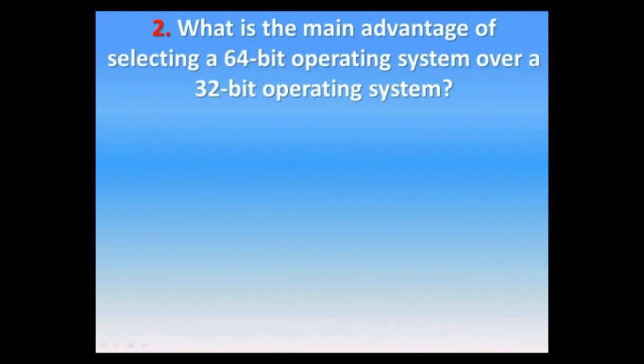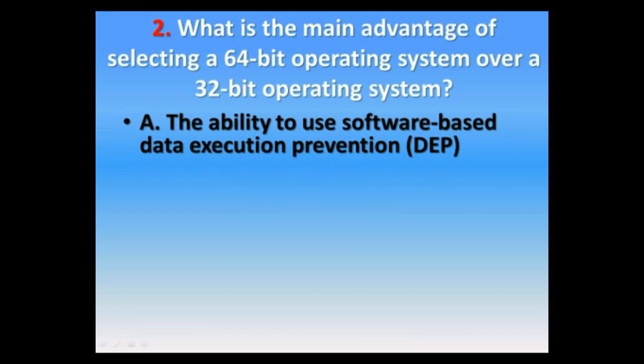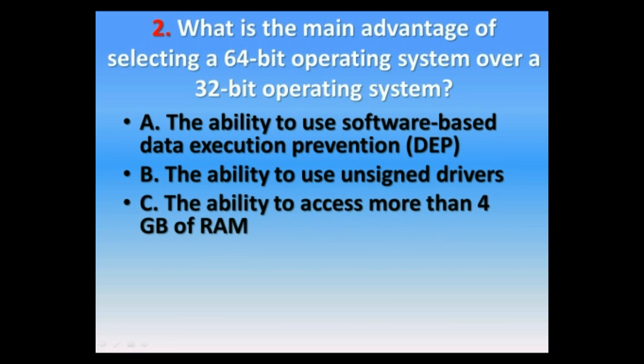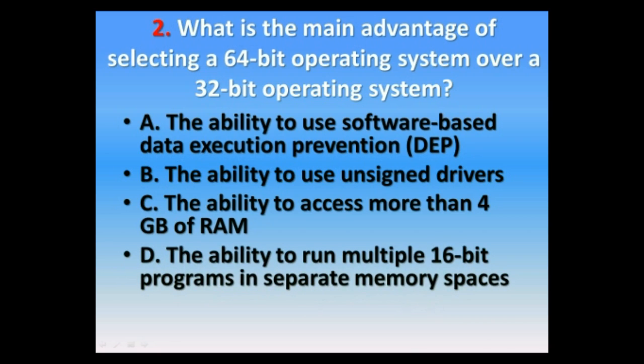Question number two. What is the main advantage of selecting a 64-bit operating system over a 32-bit operating system? A. The ability to use software-based data execution prevention, also known as DEP. B. The ability to use unassigned drivers. C. The ability to access more than 4 gigabytes of RAM. Or D. The ability to run multiple 16-bit programs in separate memory spaces. The correct answer is C. The ability to access more than 4 gigabytes of RAM.